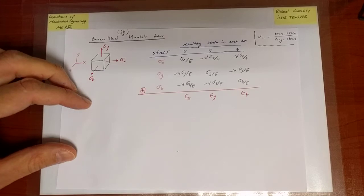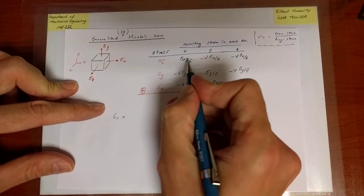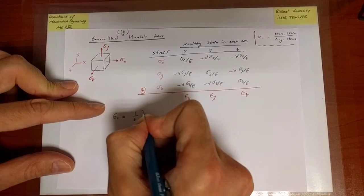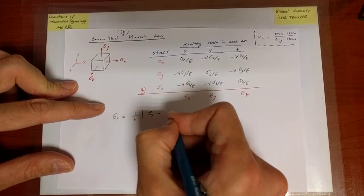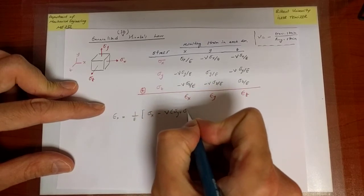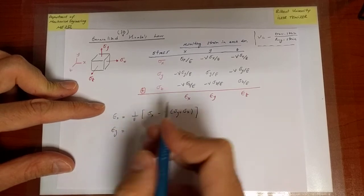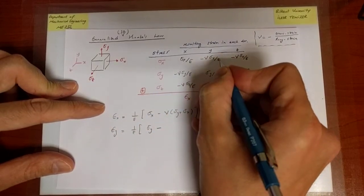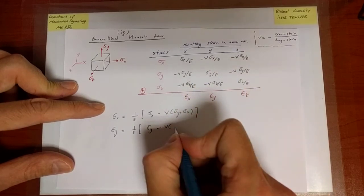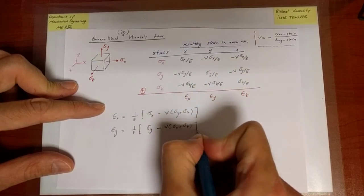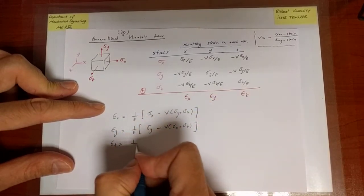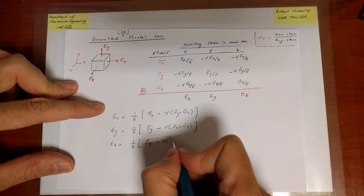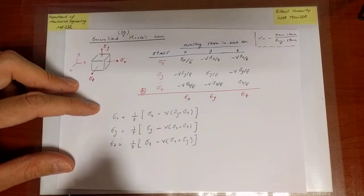So in other words, epsilon X is going to be some of these three quantities, 1 over E times sigma X minus nu sigma Y minus nu sigma Z. And epsilon Y is going to be 1 over E times sigma Y minus nu times sigma X minus nu times sigma Z. And finally, epsilon Z similarly is going to be 1 over E, common factor for all, sigma Z minus nu times sigma X minus nu times sigma Y.